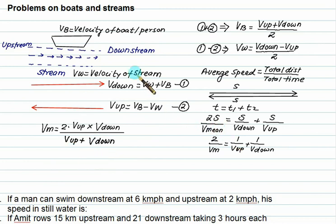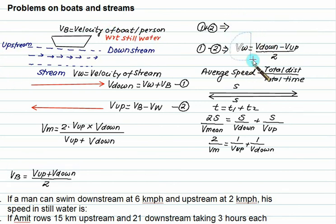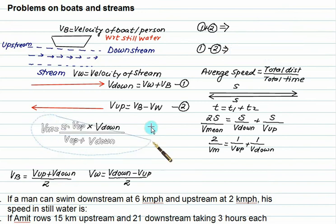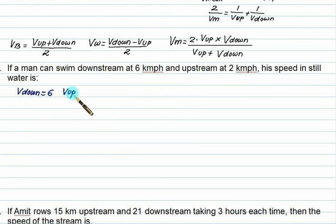We have the formulas for Vb and Vw. Example: A man can swim downstream at 6 km/h — that is velocity of downstream — and upstream at 2 km/h. His speed in still water, that is Vb, equals velocity of upstream plus velocity of downstream divided by 2, which gives 4 km/h.